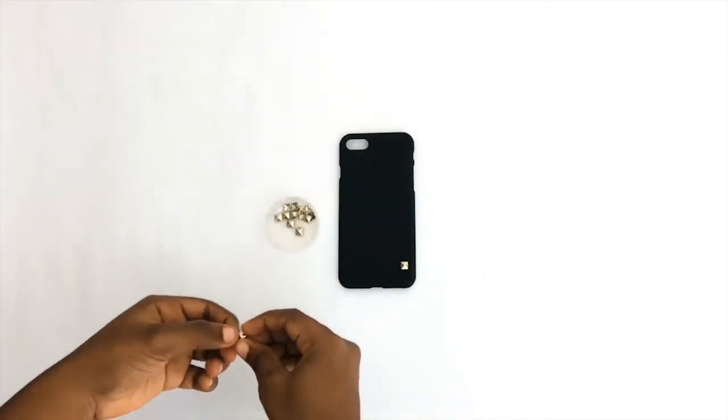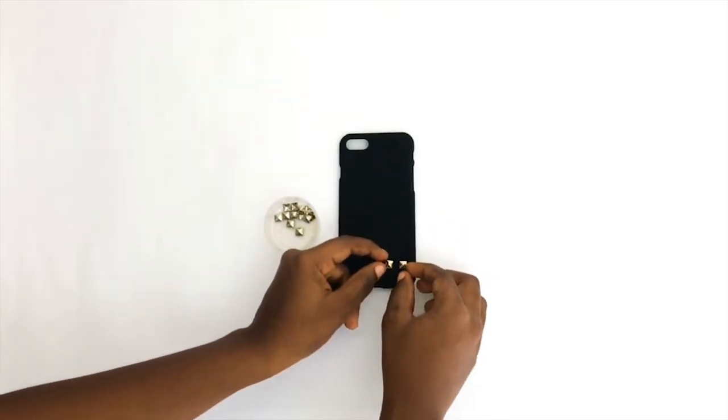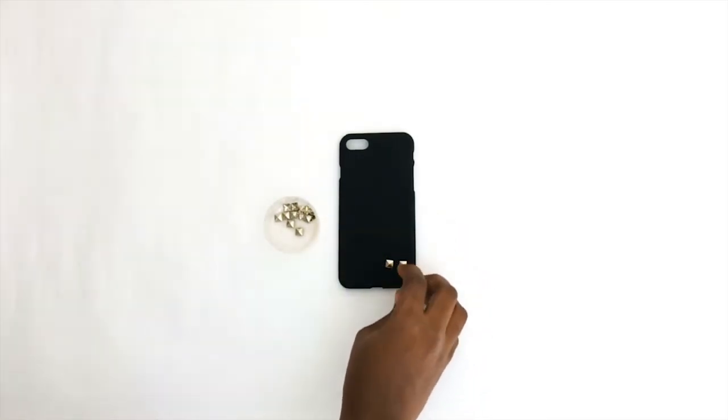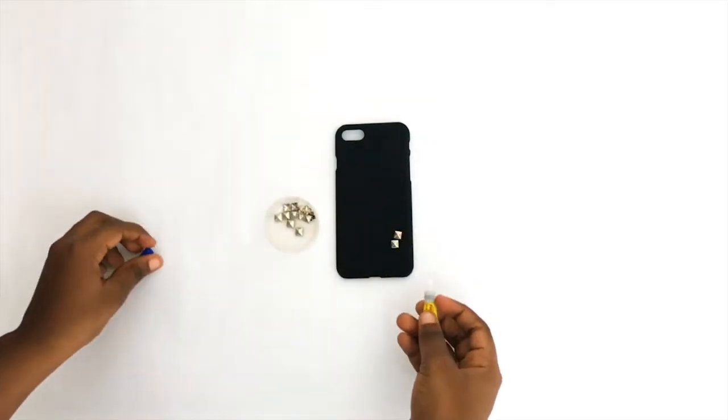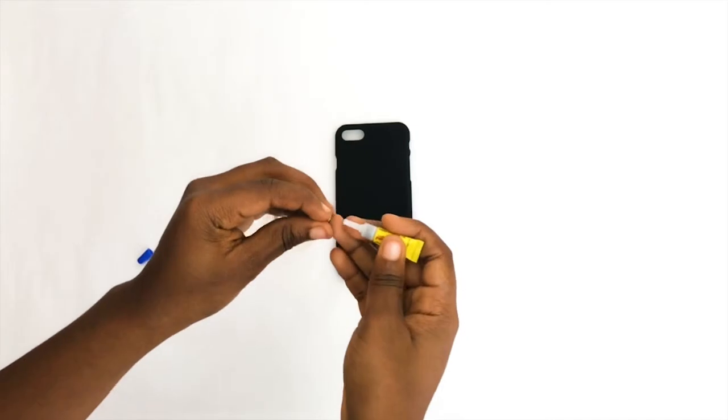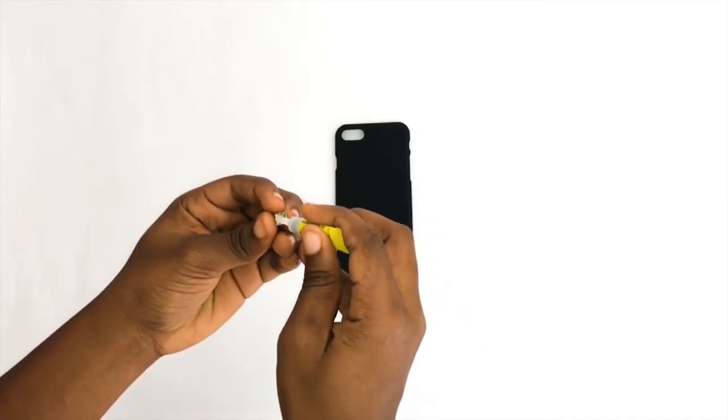Then grab your studs and place them how you would like. Now this is completely optional. You can either place your studs together or leave a gap between each subsequent stud like I did. Then grab onto your hot glue gun and begin sticking.